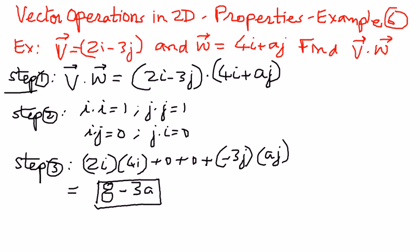We have a variable term in the answer: 8 minus 3a. We cannot subtract 3 from 8 because 3 has an a attached to it. Therefore, 8 minus 3a is our final answer.